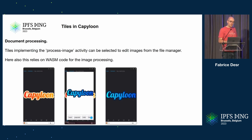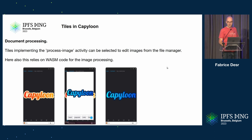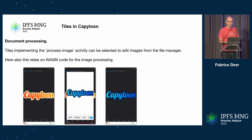The second use case shows more document editing and processing. All media files in Capilun are exposed through a virtual file system. In the file manager, when you have an image, you can now use a tile to edit it. I just opened the logo in what we call an inline activity — slightly smaller than full screen — inverted the image color, and you end up with the updated version. Here also it's done using mostly Wasm code for image processing, but you could plug in whatever you want. Everything is done on device; nothing leaves the device.